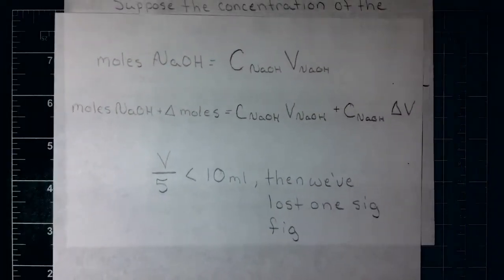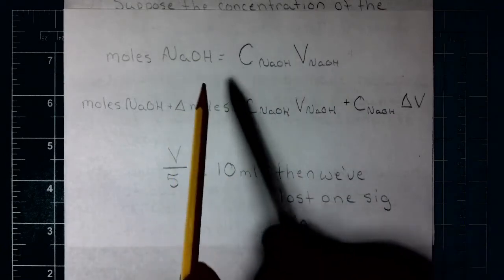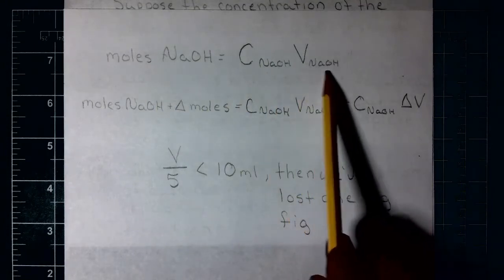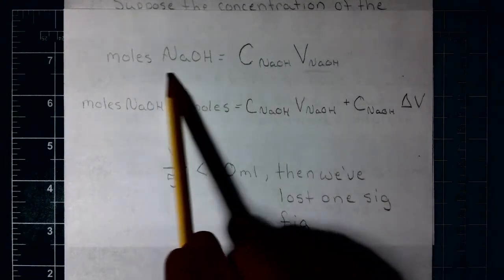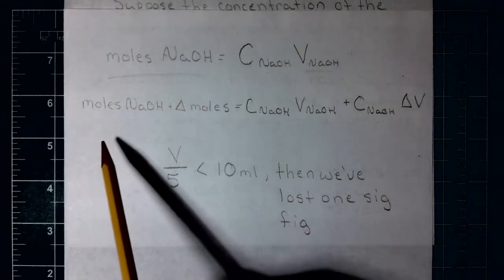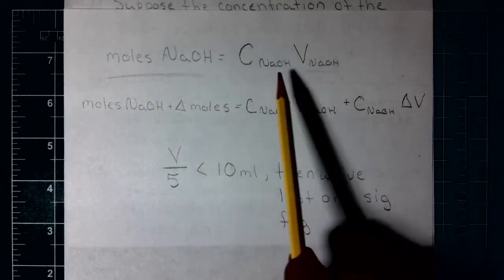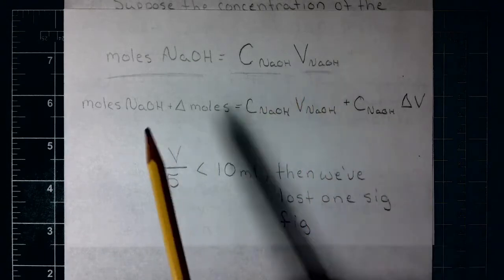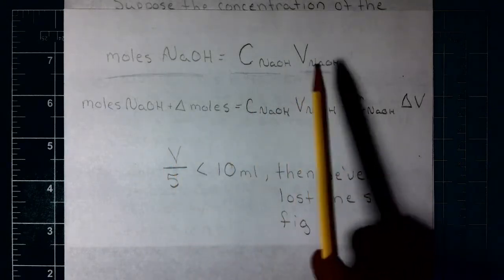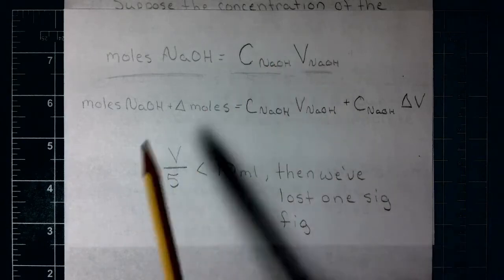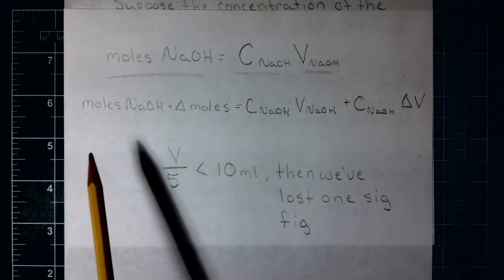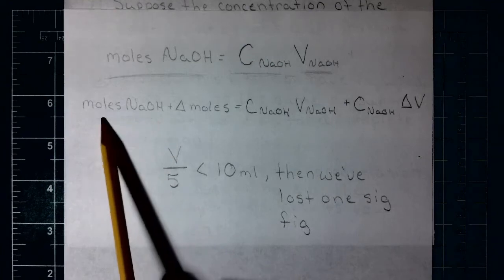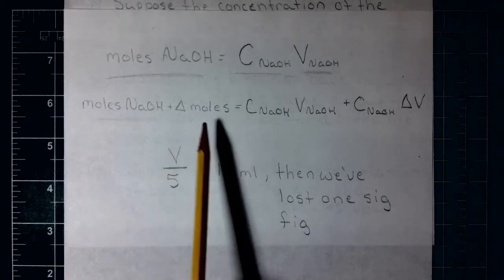To answer those, we know that moles of sodium hydroxide added equals concentration times volume of sodium hydroxide. Because the moles needed to reach the endpoint won't change, if we increase the concentration by five times we only need to add one-fifth of the volume — so we need less volume. We're getting more sodium hydroxide with every drop, so less volume is required.